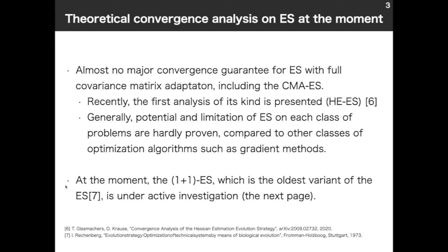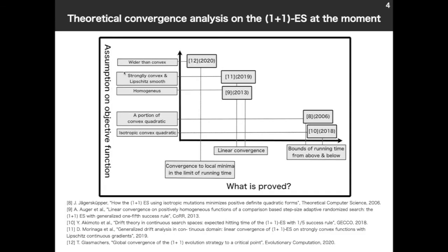At the moment, the (1+1)-ES, which is the oldest variant, is under active investigation, as we see in the next page. This figure is the current situation of theoretical convergence analysis on the (1+1)-ES. The vertical axis is the assumption on the objective function, and the horizontal axis shows what is proved if we assume it. Each item indicates each study.